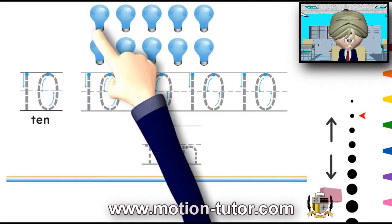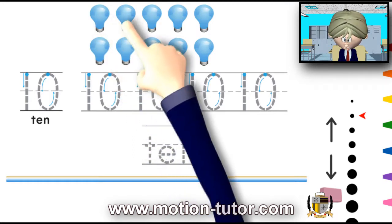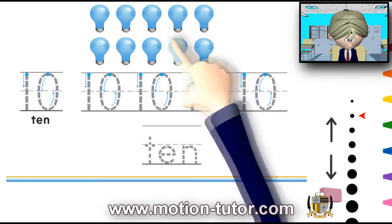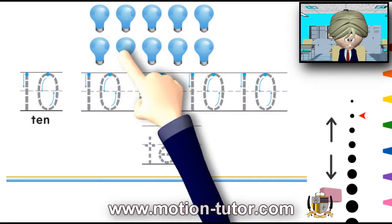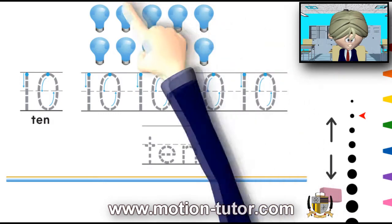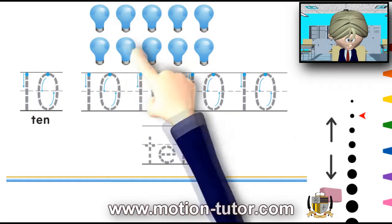We will start by counting. 1, 2, 3, 4, 5, 6, 7, 8, 9, 10. So, there are 10 light bulbs up here.